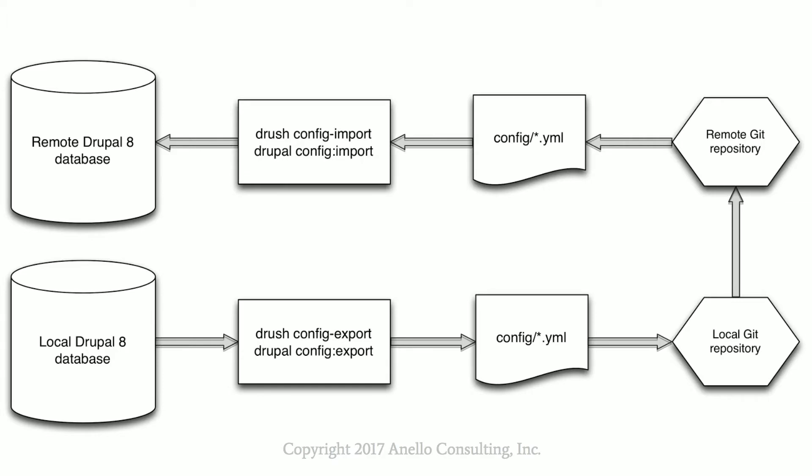It's all or nothing — we're not outputting one config, we're outputting all the config and replacing all of the config. That's especially important on the config import, because if there are config changes on a remote site that were made directly on the remote site, and we do a config import, we throw out all of those remote config changes and import everything that's in the repo. That's when things get lost.